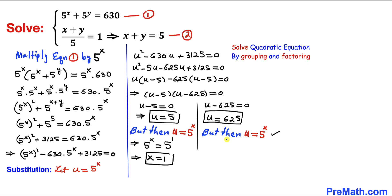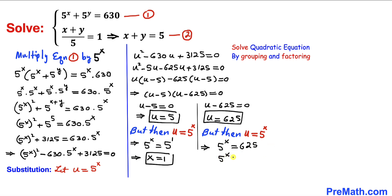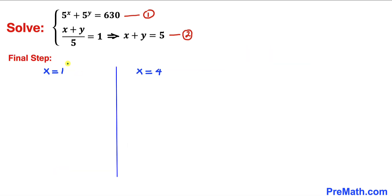For the second factor, u minus 625 equals zero yields u equals 625. Since u equals 5^x, we get 5^x equals 625, and 625 equals 5^4. So 5^x equals 5^4, and equating exponents gives x equals 4.